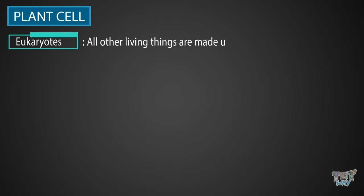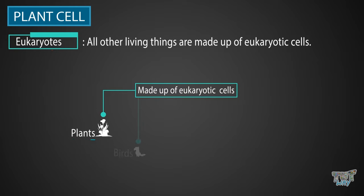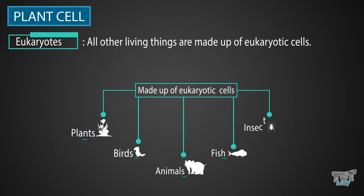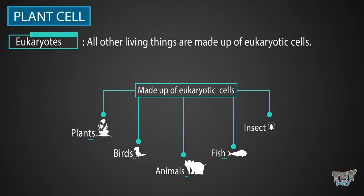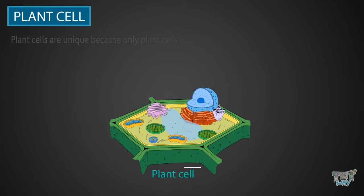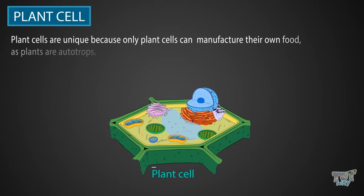All other living things, like plants, birds, animals, fish, insects, and all types of plants, that later came into being on earth through the process of evolution, are made up of complex eukaryotic cells. The plant cell is unique because only plant cells can manufacture their own food, as plants are autotrophs.